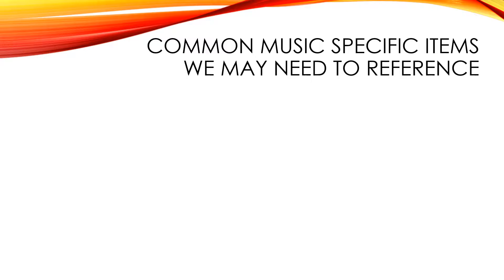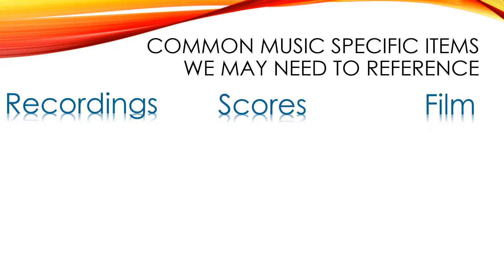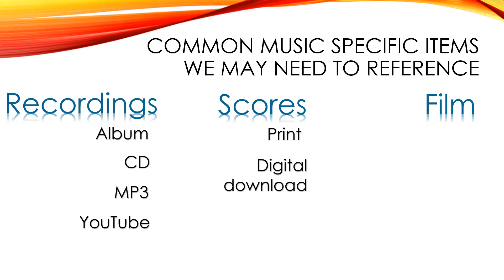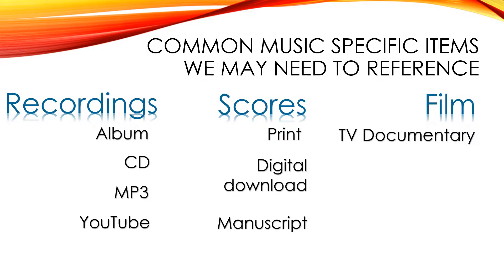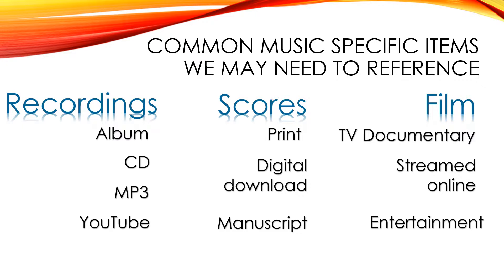There are many different types of music specific sources and many of these are not the standard print format such as a textbook or an academic book. I've broken down the different types of sources music students may encounter into three categories: recordings, scores, and film. Recordings include items such as an album, a CD, MP3, or even a YouTube video. Scores may include printed scores, digitally downloaded scores such as those from YouScore, or even manuscripts. Film may include a TV documentary, an online or streamed video, and feature films.